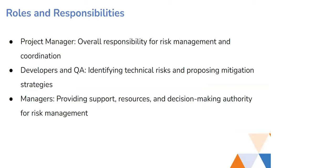For roles and responsibilities: the project manager is mostly responsible for managing and coordinating, and is held accountable for the overall risk process. Developers and QA — including tech leads and senior developers — are mostly responsible for identifying technical risks as they work on technical aspects. Managers handle decisions like outsourcing or passing a project to another pod, as decision-making authority beyond the PM level sits with managers. The idea is: we identify and assess the risk, give a proper briefing to the managers, and they take the final decision on what action to take.